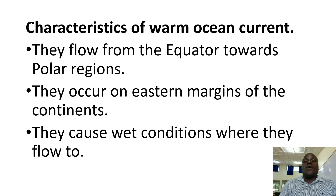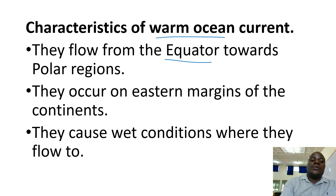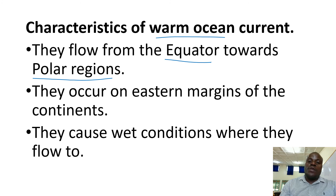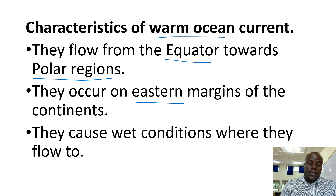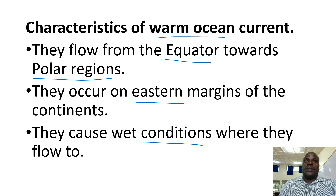Characteristics of warm ocean currents: they flow from equatorial regions to polar regions. They occur on the eastern margins, the eastern side of the continent. They always cause wet conditions in the neighboring regions, because they carry warm moist air. They are warm, and therefore they cause the air they meet on land to rise to condensation level, which forms clouds, and clouds form rainfall. Thank you.